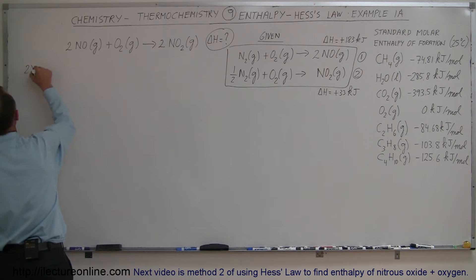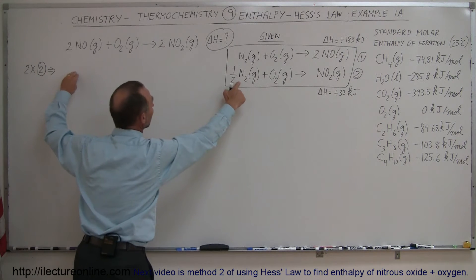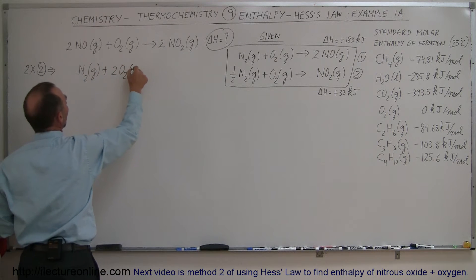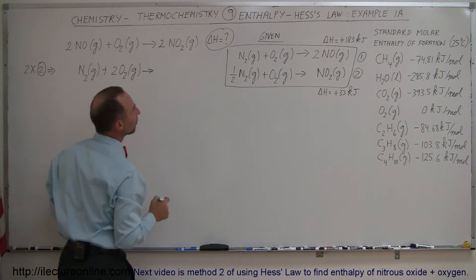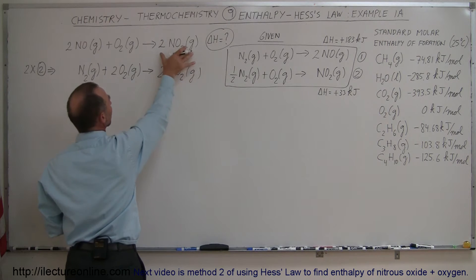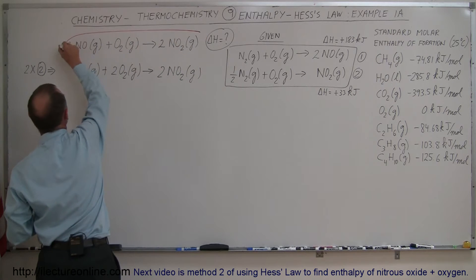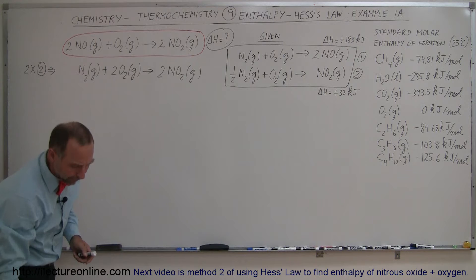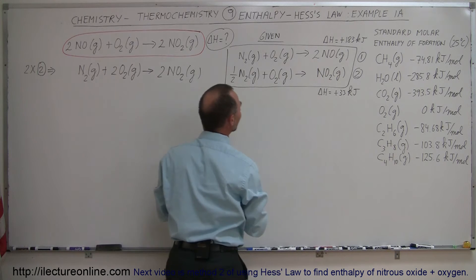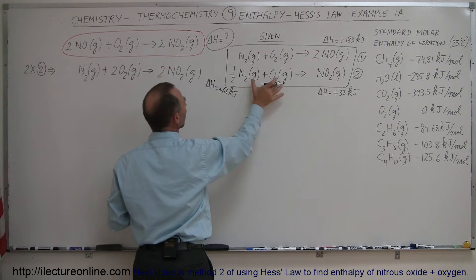So we're going to take 2 times equation number 2. When we do that we end up with twice that equation: 1 mole of nitrogen gas plus 2 moles of oxygen gas reacting to give us 2 moles of nitrogen dioxide gas. Now we can see that the product on the right side matches the product in the equation we're trying to find. Since we're doing equation 2 twice, this will require twice 33, or 66 kilojoules. So delta H is equal to +66 kilojoules.